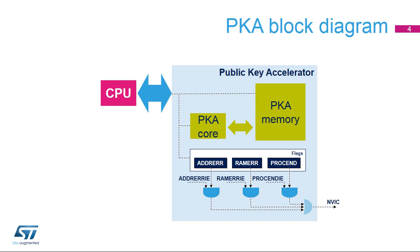Once the PKA reports the end of operation, or PROCENDF, the CPU reads the resulting data from the PKA RAM, then clears the PROCENDF flag. Software can abort a PKA operation at any time by clearing the EN bit in the PKA CR register. In this case, the content of the PKA memory is not guaranteed.